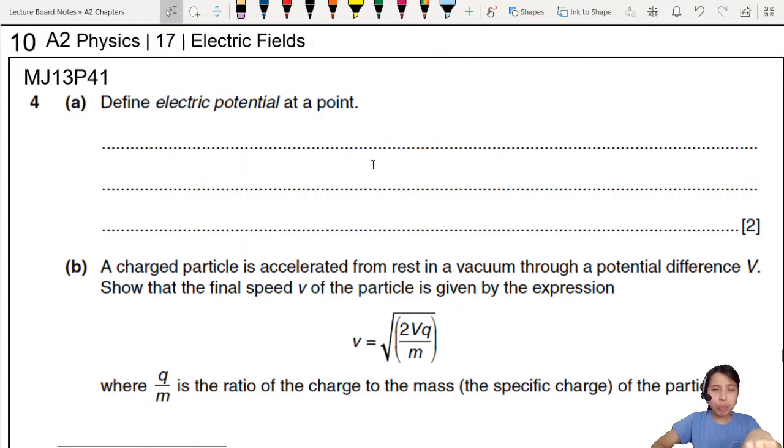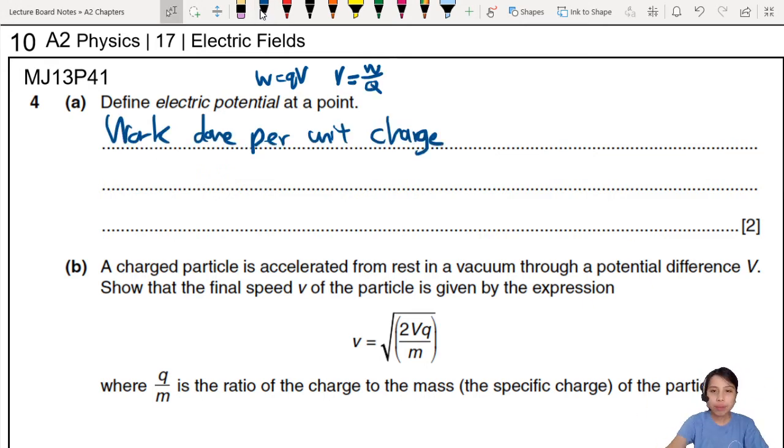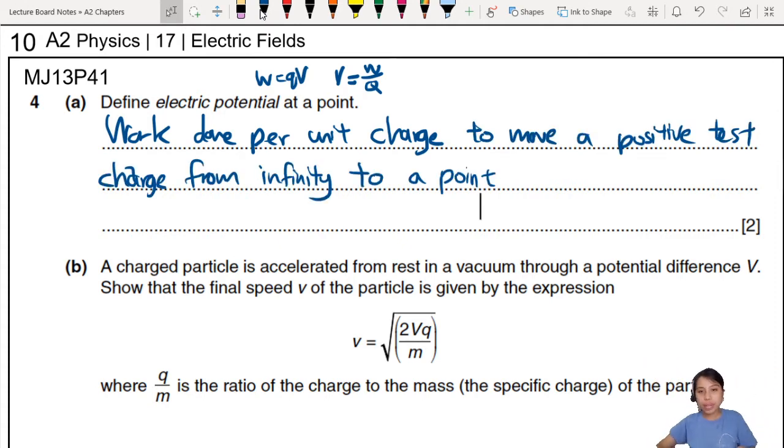MJ13P41: Define electric potential at the point. This one should already be memorized by now. What is potential? Work done per unit charge to move a positive test charge from infinity to a certain point. Two marks: work done per unit charge to move a positive charge from infinity to a point.